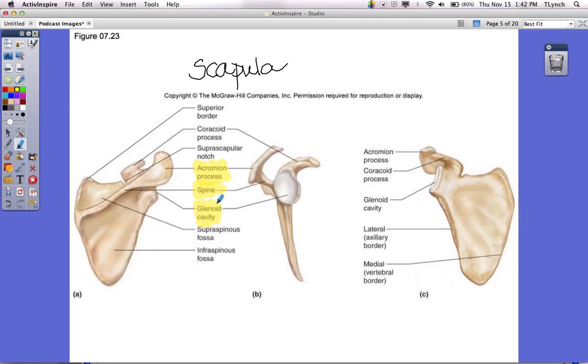You also should have labeled the glenoid cavity. This is actually a socket here. This is where the humerus meets up with the scapula and forms a joint. You should have also labeled the coracoid process, which is this area here. Processes kind of jut out on bones. The glenoid cavity is there, the acromion process and also the coracoid process.